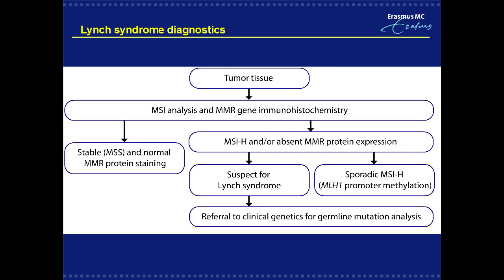Lynch syndrome is a hereditary syndrome caused by a mutation in one of the mismatch repair genes — MLH1, MSH2, MSH6, and PMS2. It is characterized by the development of malignancies, including colorectal cancer and endometrial cancer. The molecular hallmark of Lynch syndrome in tumor tissue is microsatellite instability. Current diagnostics include analysis for microsatellite instability and immunohistochemical staining for mismatch repair proteins, as shown in this flowchart. The combination of these tests is known to improve molecular diagnostics for Lynch syndrome.